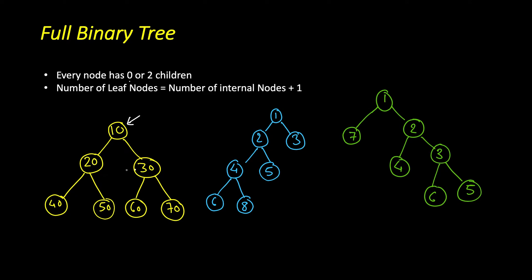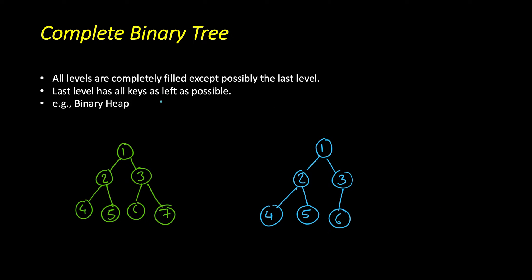All the leaves will have zero children and all the internal nodes here will have two children. Similarly, the second tree does not look very full but still it's a full binary tree because all the nodes have two or zero children — one has two, three has zero, none of the nodes have one child. But if I remove a node, this is no longer a full binary tree because that node has just one child. So in order to make it full you have to add one more node. Next is complete binary tree.